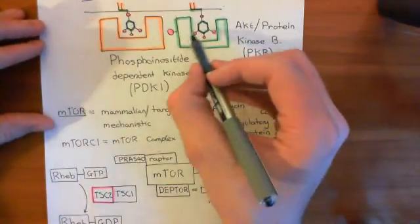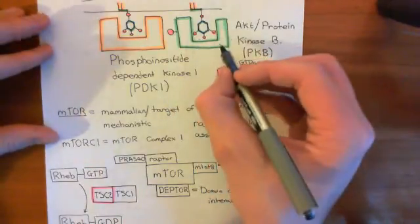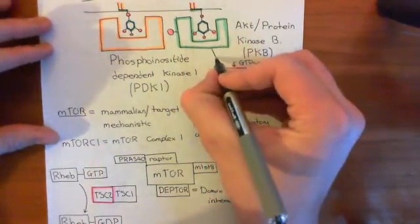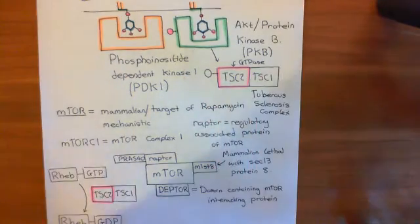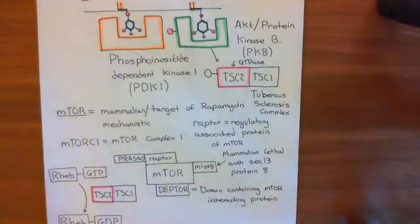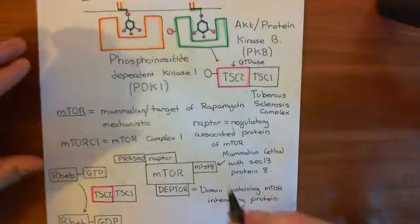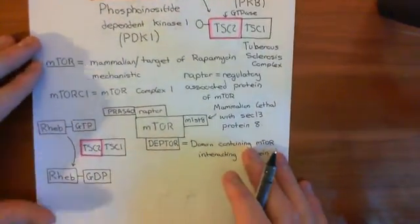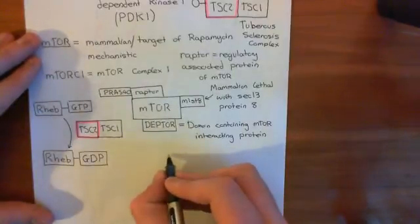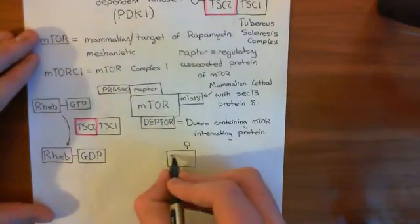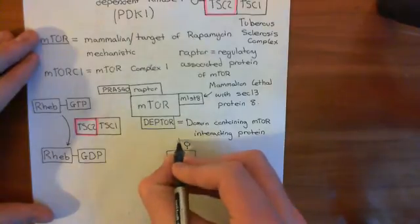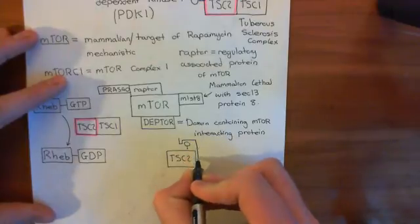AKT, or protein kinase B, has become active by the growth factor binding to the growth factor receptor. What AKT does is it adds a phosphate group onto the TSC2 protein. When you add that phosphate group onto TSC2, another protein comes and interacts with it — the 14-3-3 protein.